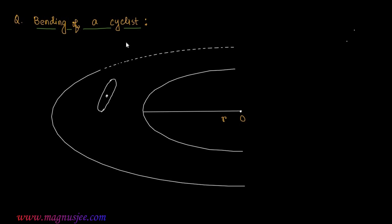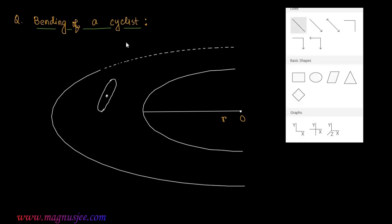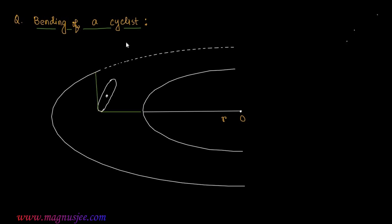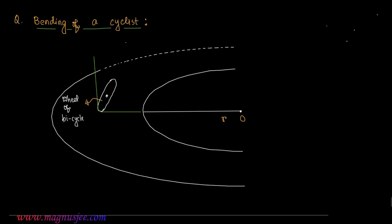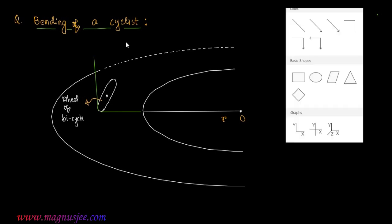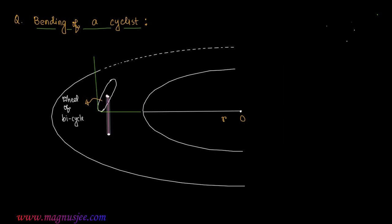We can draw the wheel of the cyclist or bicycle. This is the wheel of the bicycle. We can denote the horizontal and vertical directions for reference in our analysis.